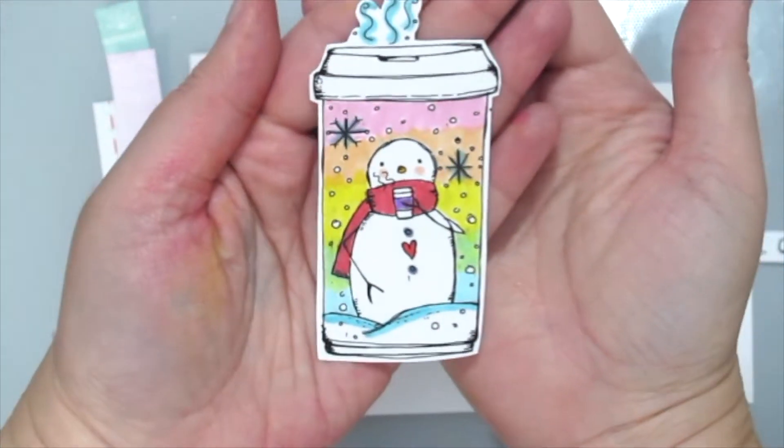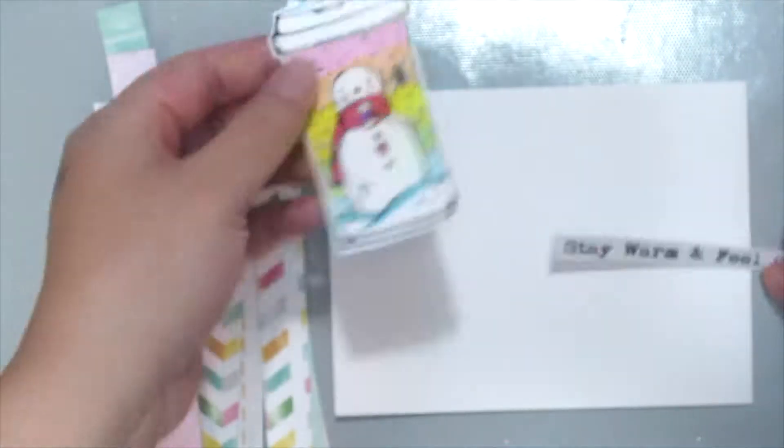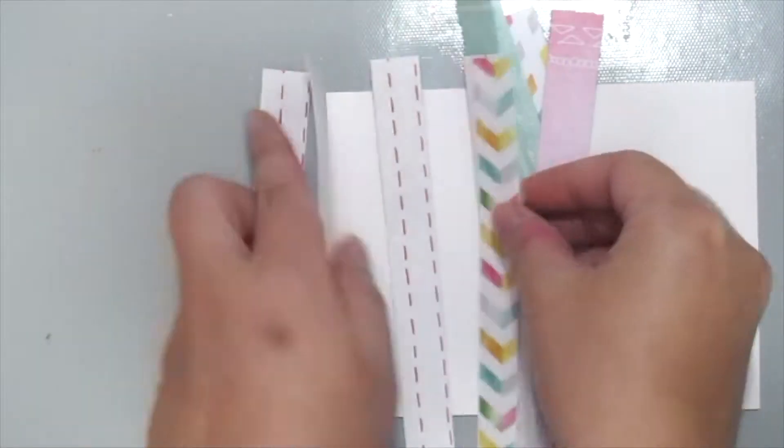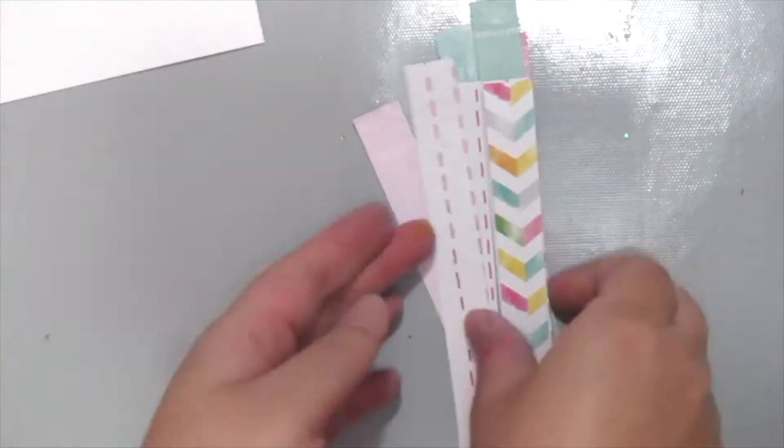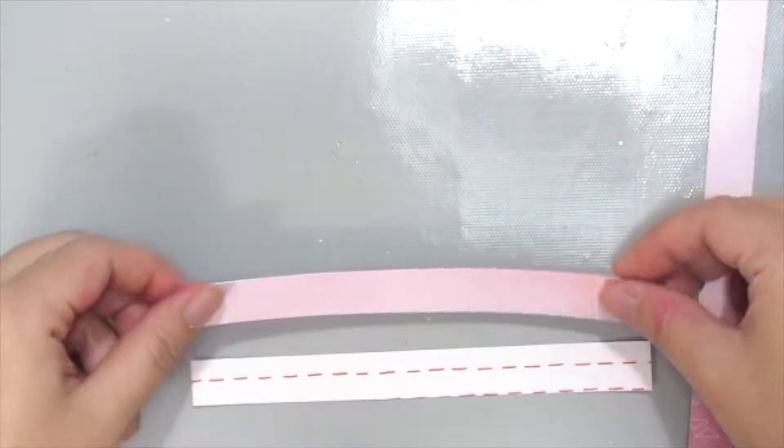First, I've already stamped and colored this cute snowman to go from Unity Stamp. Here I'm grabbing my scrap pieces of paper which I've already cut into half-inch strips. What you want to do is...